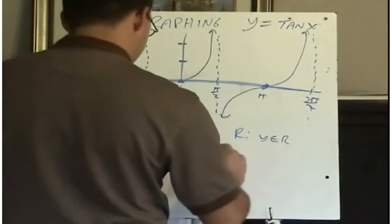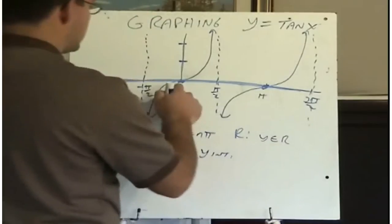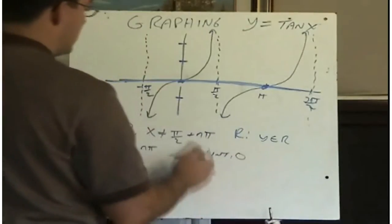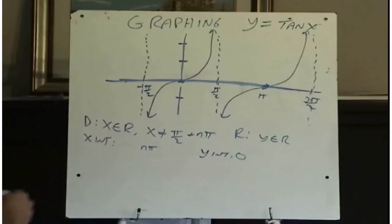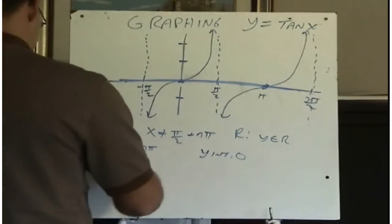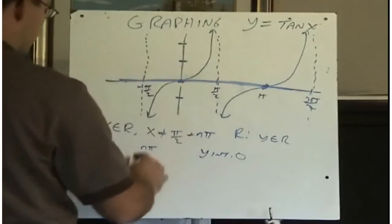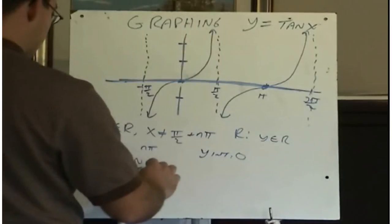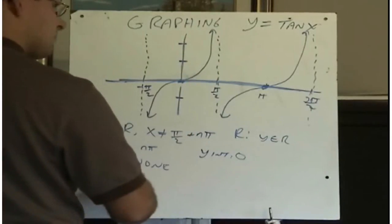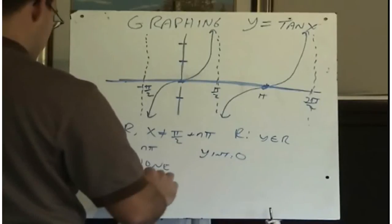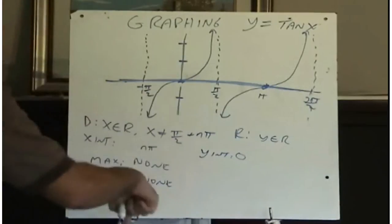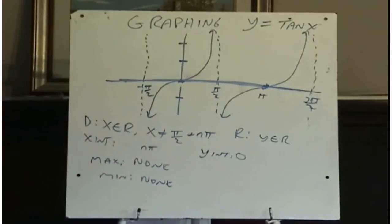The y-intercept is what? Zero. The y-intercept is zero. There's only one of those. What's the maximum value of this function? Well, it goes on to infinity. So there is no max. And what's the minimum value of this function? Same thing. It goes down forever. There is no minimum. So those will be the properties of y equals tan x.